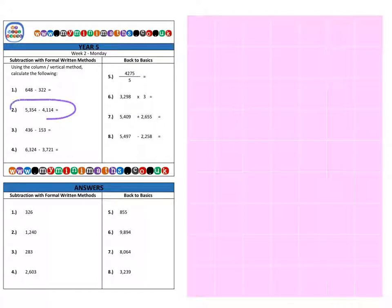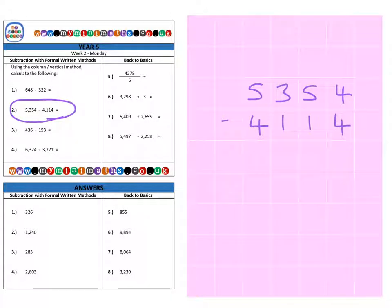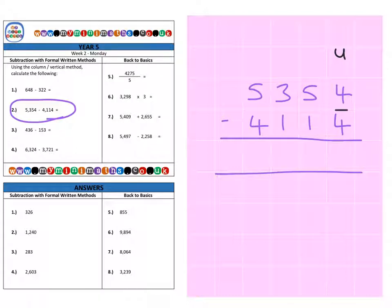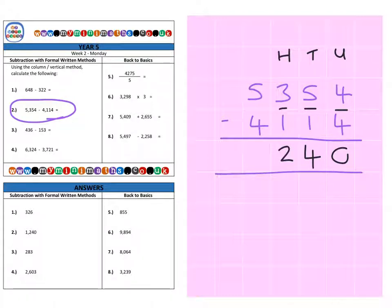Next we're on to question 2, which is 5354, and we're going to subtract 4114. Again we need to make sure we have everything lined up. 4 units subtract 4 units gives us 0. Then we have 50 subtract 10 gives us 40. In the hundreds column we have 300 subtract 100 to give us 200. And finally in the thousands column we have 5000 subtract 4000 to give us 1000, for a final answer of 1240.